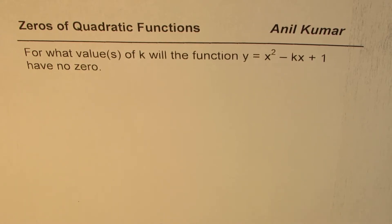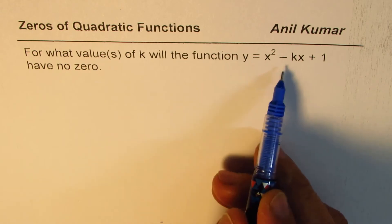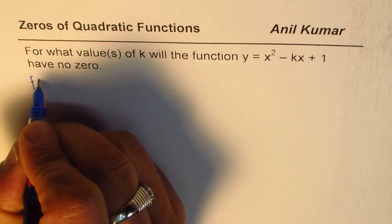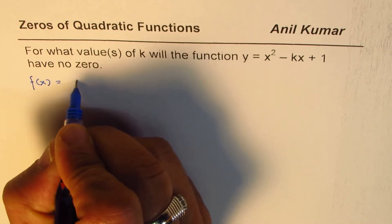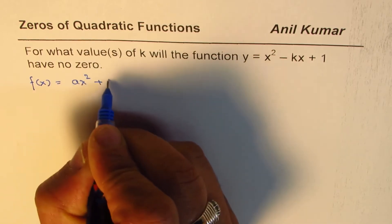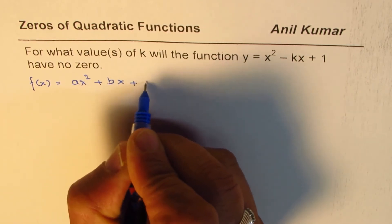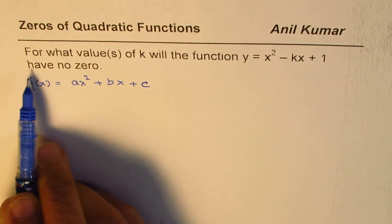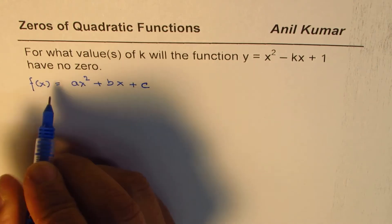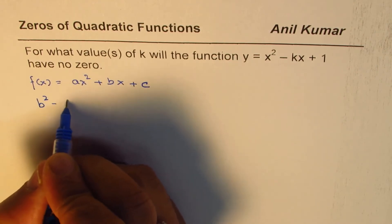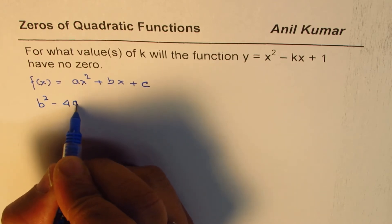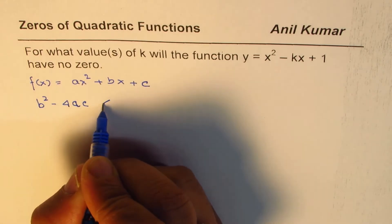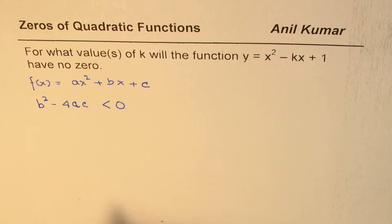You can pause the video, answer the question, and then look into my suggestion. We're working with quadratic functions which could be written as f(x) = ax² + bx + c, and the condition for no zeros is that the discriminant b² - 4ac should be less than zero.